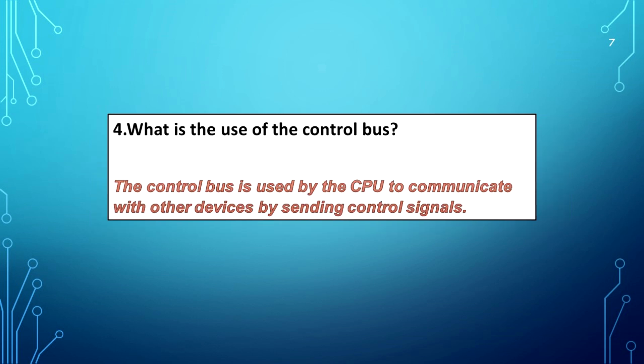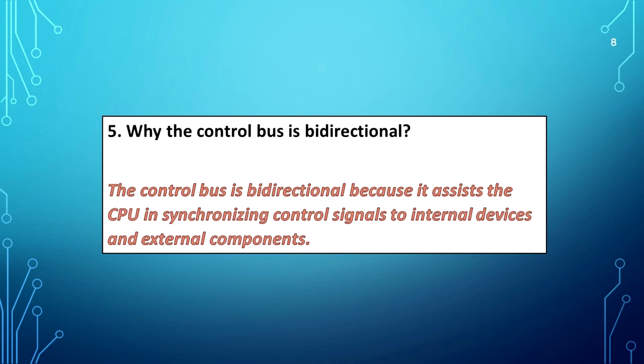What is the use of the control bus? The control bus is used by the CPU to communicate with other devices by sending control signals. Why the control bus is bidirectional? The control bus is bidirectional because it assists the CPU in synchronizing control signals to internal devices and external components.